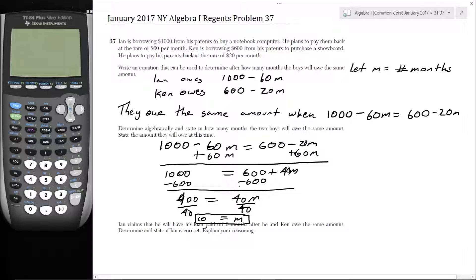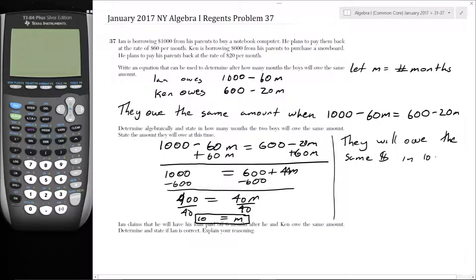Dividing by 40, you get M equals 10. So they will owe the same amount of money in 10 months.